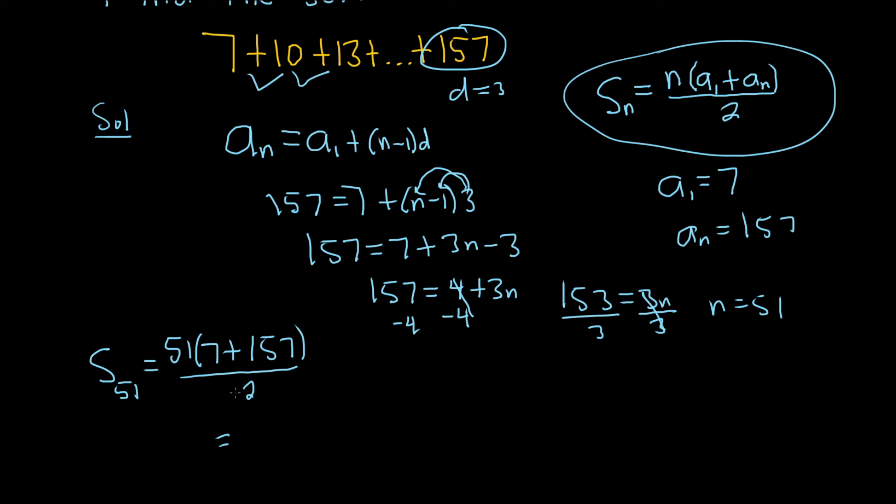So I'm going to put this in my calculator, 51 times 7 plus 157, all divided by 2, I got 4,182. That would be the sum that is up here on the screen.